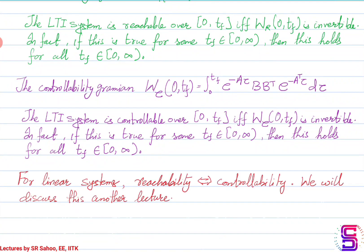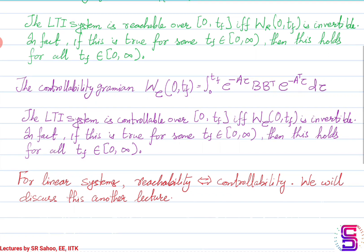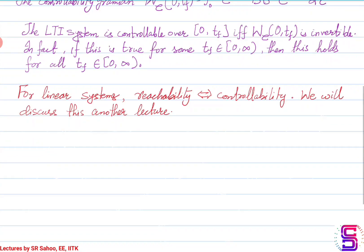For LTI systems, we will see in subsequent lectures that reachability implies controllability and controllability implies reachability. In fact, the conditions for reachability and controllability are essentially going to be the same. We will discuss this in another lecture. As of now, in this lecture, we will focus primarily on the controllability conditions for linear time-invariant systems.